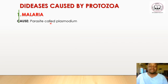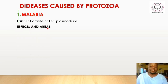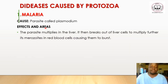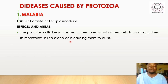Malaria is caused by a parasite called plasmodium. The parasite plasmodium affects the blood circulatory system — in particular, it affects the red blood cells, reducing their number in our bodies. The parasite multiplies in the liver, then breaks out of liver cells to multiply further in red blood cells, causing them to burst.